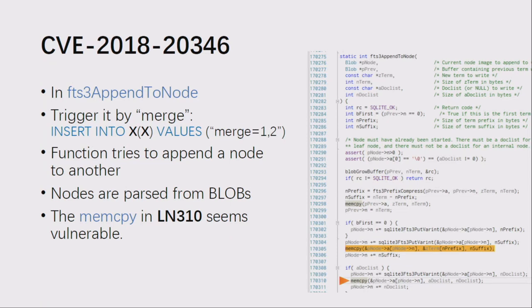The first vulnerability, CVE-2018-20346, is also the main vulnerability we use to exploit Google Home. It requires complex preconditions — we have to carefully construct many tables and content. But once the preconditions are met, vulnerability exploitation is very simple and stable. The vulnerability is located in the function fts3_appendToNode. It can be triggered with the special syntax 'merge=1,2', which specifies the level to be merged. This function tries to append a node to another; the node is stored in a blob, so the function first parses the B-tree, gets the start position and length of binary data of the nodes to be processed, then performs a memcpy to copy them into a new blob representing a new tree.